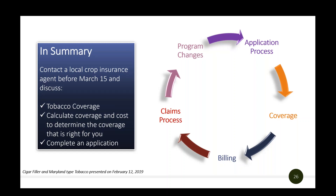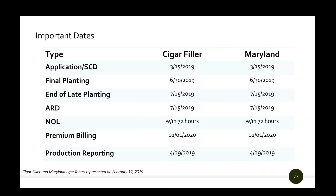The cycle continues: application, coverage, billing, claims, and then any program changes. As a reference, all of the dates that pertain to both the cigar filler and Maryland types are included here. The most important ones are the application date, final planting date, end of late planting date, acreage reporting date, notice of loss requirements, when premium billing occurs, and production reporting. Remember, these are all for the 2019 crop year.